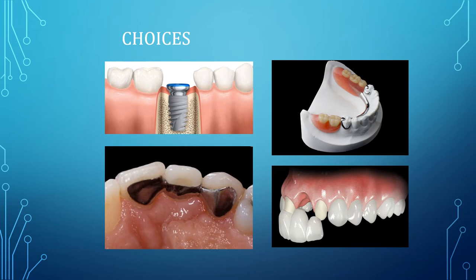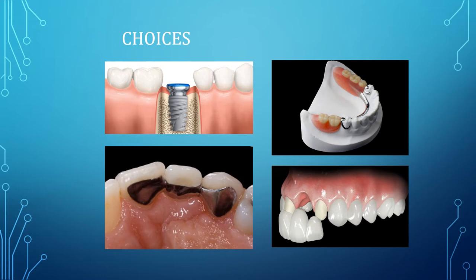When replacing missing teeth, the options vary. For a completely edentulous patient, a complete denture or implant-supported complete denture is suggested. For a partially edentulous patient, implants are currently the best treatment option, restoring both function and form. Implants are placed and fixed into the bone and are called endosseous implants.